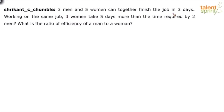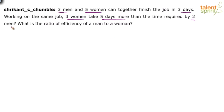Three men and five women can together finish a job in three days. Working on the same job, three women take five days more than the time required by two men. We need to find the ratio of the efficiency of a man to a woman — this is a time and work problem.